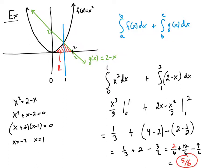For this particular question, it wouldn't make sense to do one integral with one function minus the other, because at the boundary point x = 1, to the left only one function is present and to the right the other function is present. So we split it into two straightforward integrals and add them.